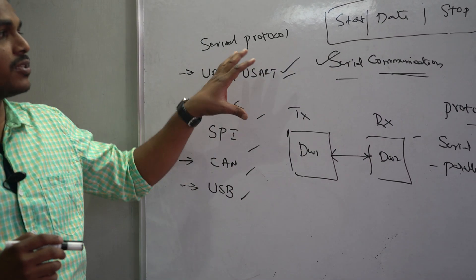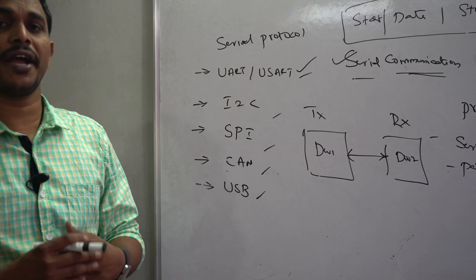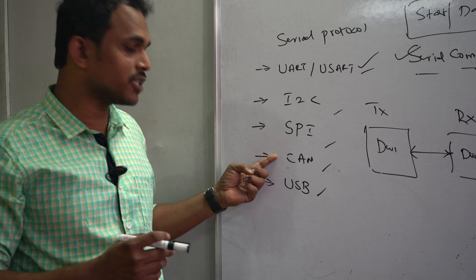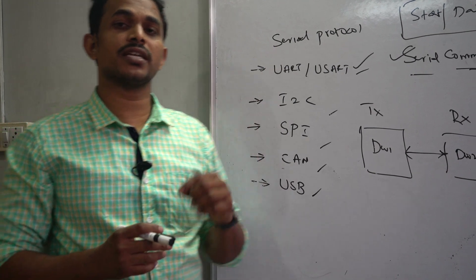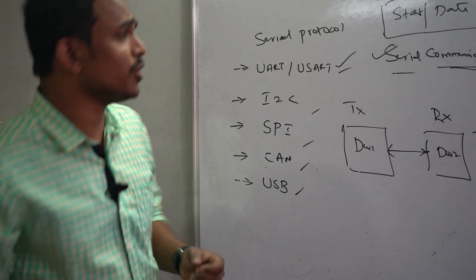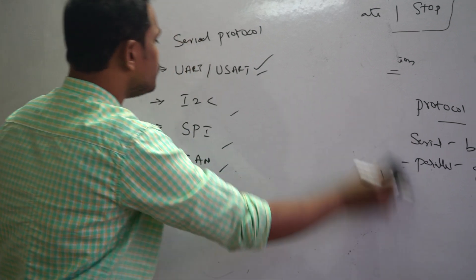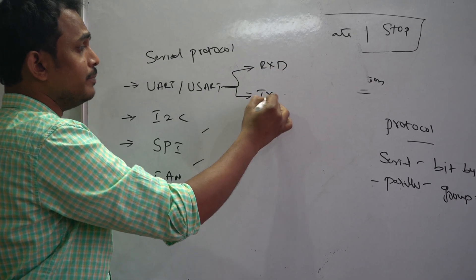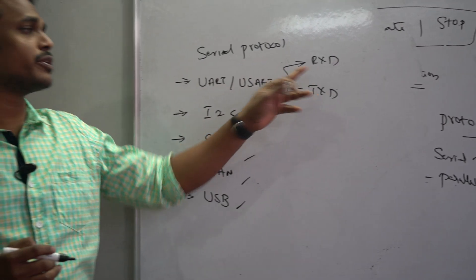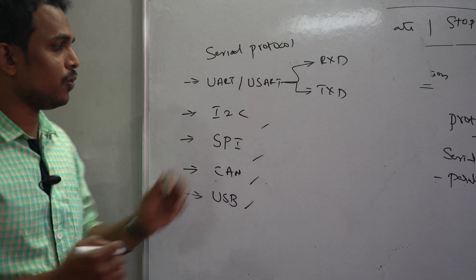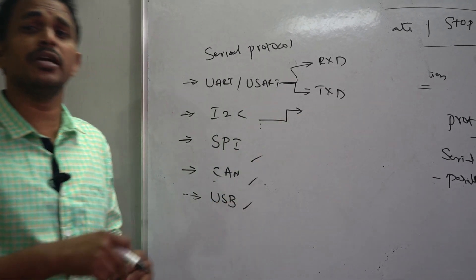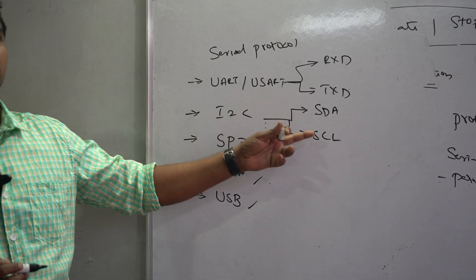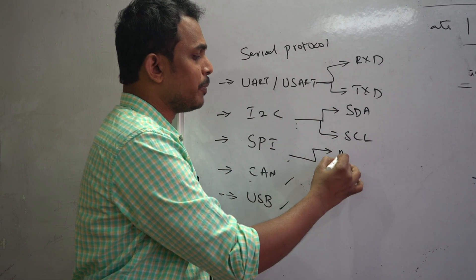You can identify which protocol a device follows by looking at its physical lines in the pin diagram. For UART protocol, you will find two physical lines: RXD and TXD from your microcontroller pin diagram. If these two pins are available, the device supports basic serial communication with UART. If a device has I2C protocol built in, you will find pins SDA and SCL — serial data line and serial clock line. If the device supports SPI protocol, you will find the physical lines MOSI and MISO.